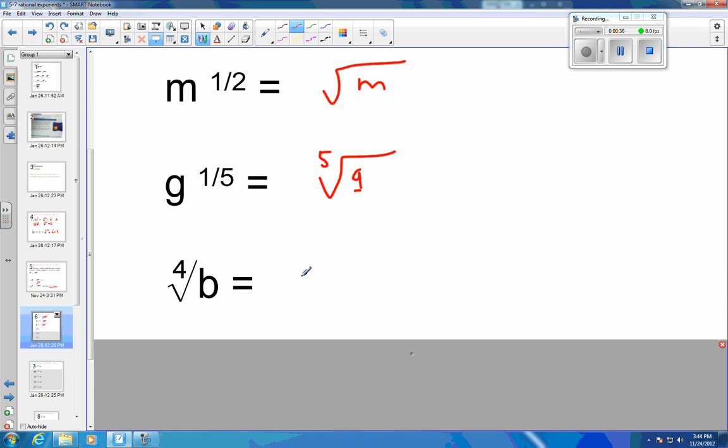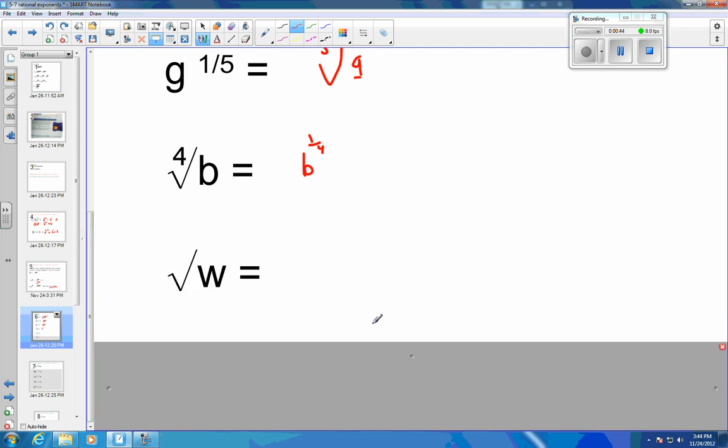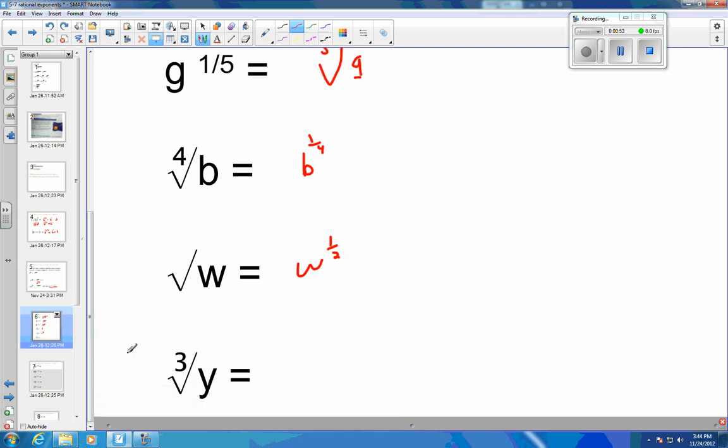Going the other direction, the 4th root of B would be B to the 1/4 power. The square root of W would be W to the 1/2 power, and the 3rd root of Y would be Y to the 1/3 power.